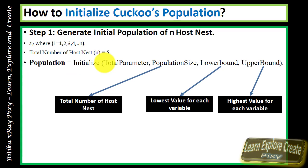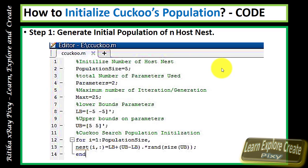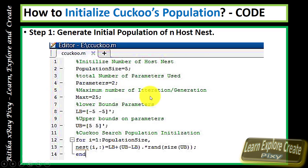So we have 5 host nests. The parameters needed for population initialization include: total number of host nests (population size), maximum iterations, and the domain (minus 5 to 5 in this example). I provided a link in the description box — you can also search for 'cuckoo search code in MATLAB' on Google or find it on the MATLAB File Exchange. In this code, population size is 5.